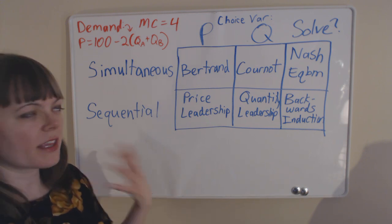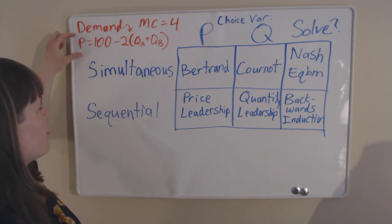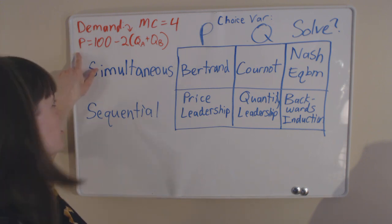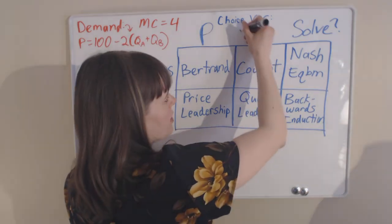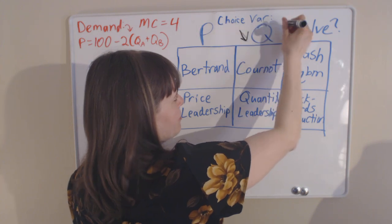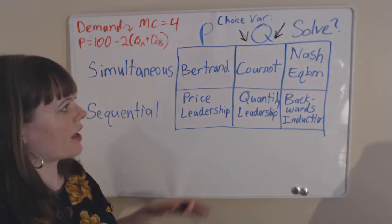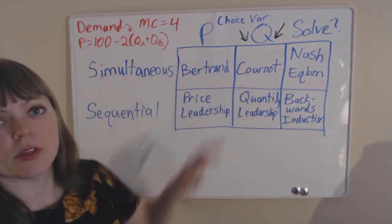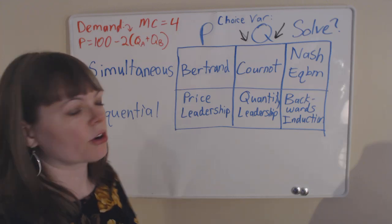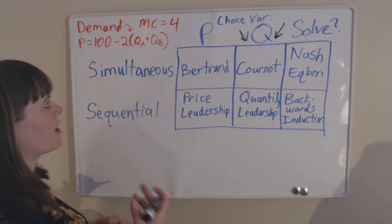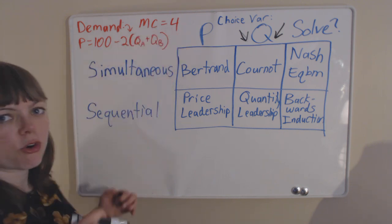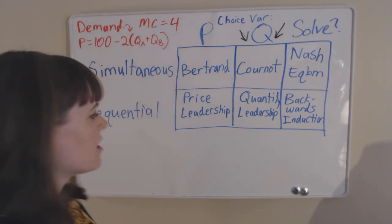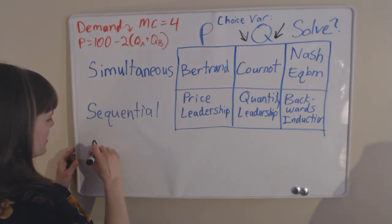Think about an example. Imagine you're given a demand curve in the industry that's this one. Our example is going to be a quantity leadership example, simply because quantity leadership and Cournot are a little bit easier to work with. Here's our demand function, and then the marginal cost is $4 to produce each unit.